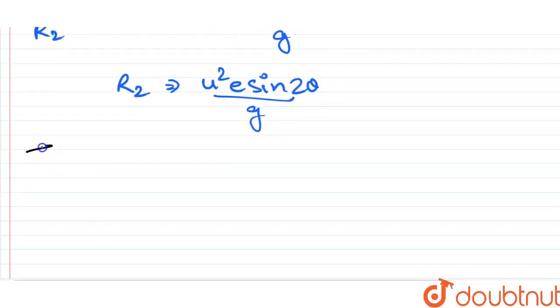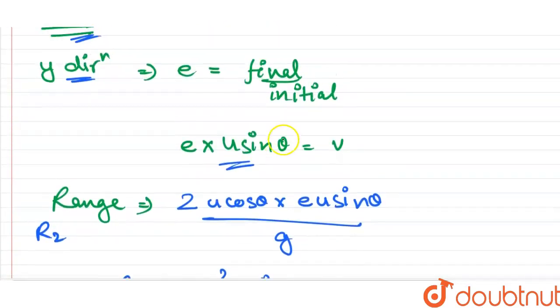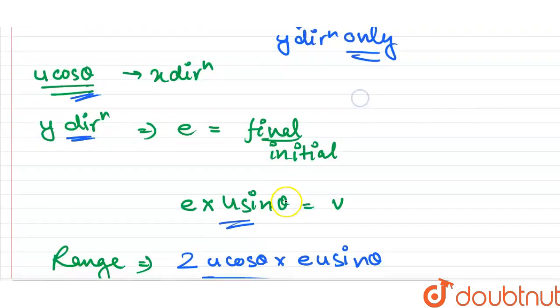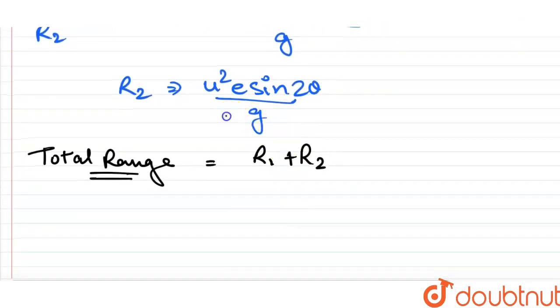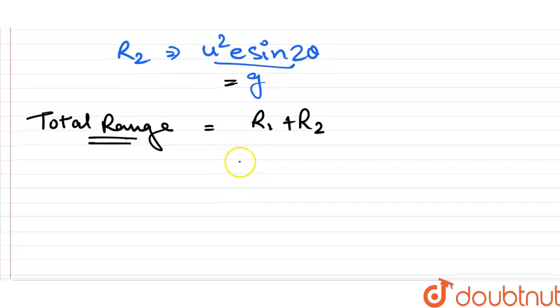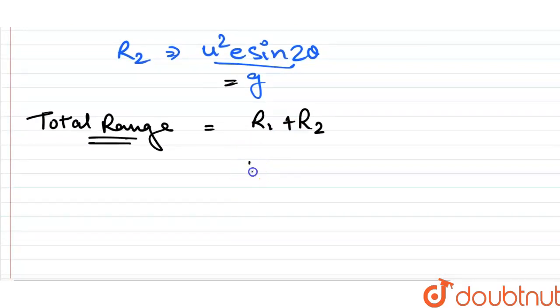Now, total range or the point of second collision from the starting point will be r1 plus r2. r1 is u square sin 2 theta by g and r2 is u square e sin 2 theta by g. So r1 plus r2 will be u square sin 2 theta times (1 plus e) upon g. So this is the final solution.